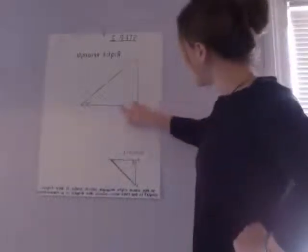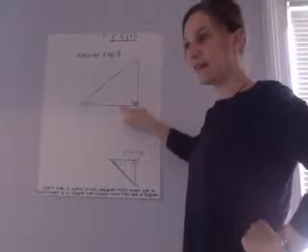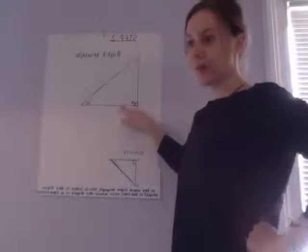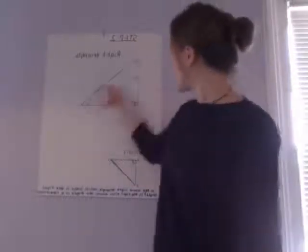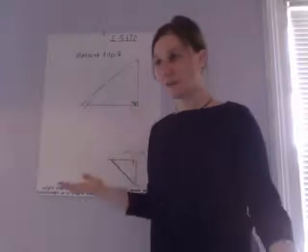So as you can see, this is a 90 degree angle, which is called a right angle. That is why we call this a right triangle, because it has a 90 degree angle.